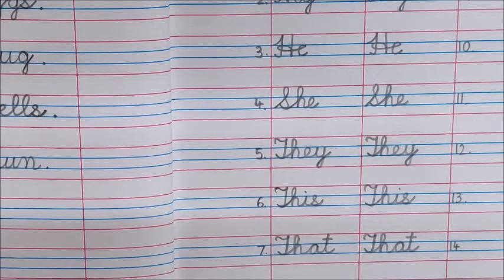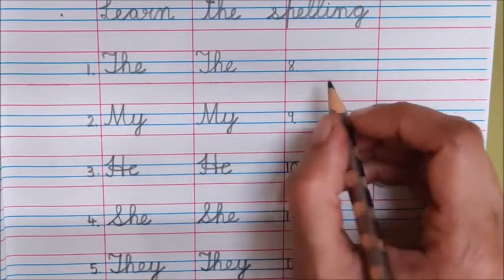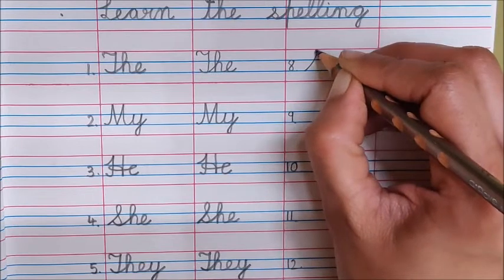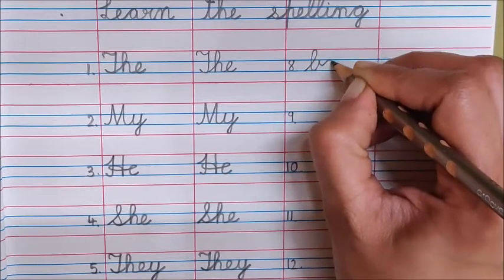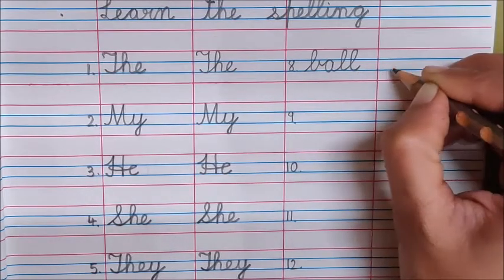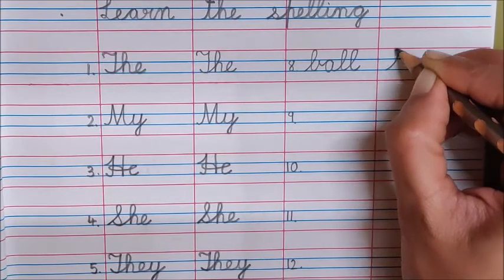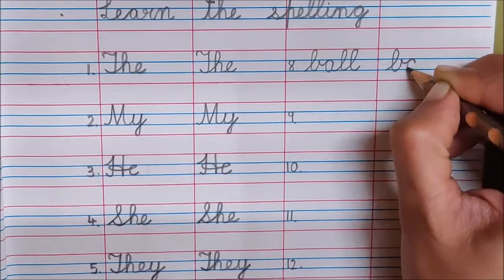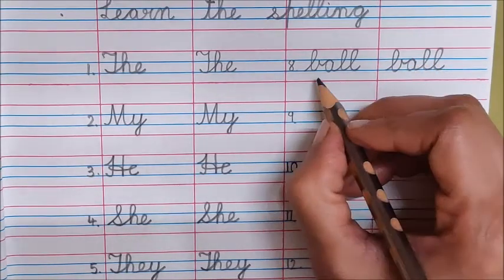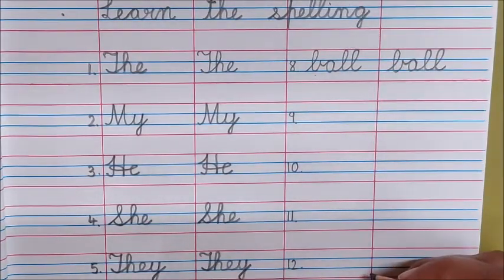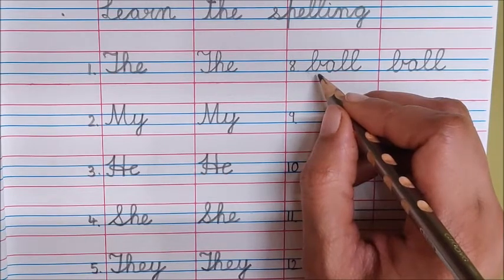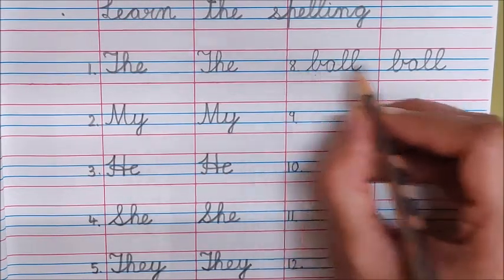Now go to eight dot. Eight dot is Ball. In the same column write down here Ball. B-A-L-L Ball. Now in the next column also write down Ball. B-A-L-L Ball. Now these words we are not going to begin with capital cursive. They will all start with lowercase cursive letter. Now we have written Ball.